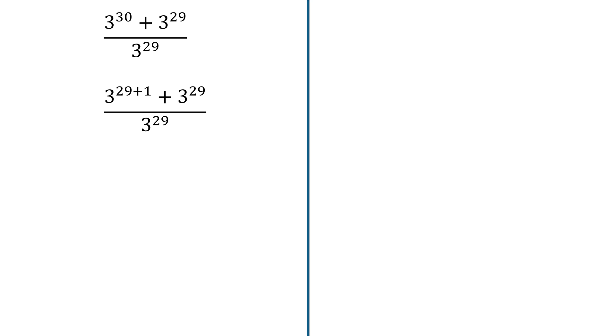The next thing we'll do is to apply the product rule which says a exponent x times a exponent y is equal to a exponent x plus y. And the reverse is also true. a exponent x plus y is equal to a exponent x times a exponent y.